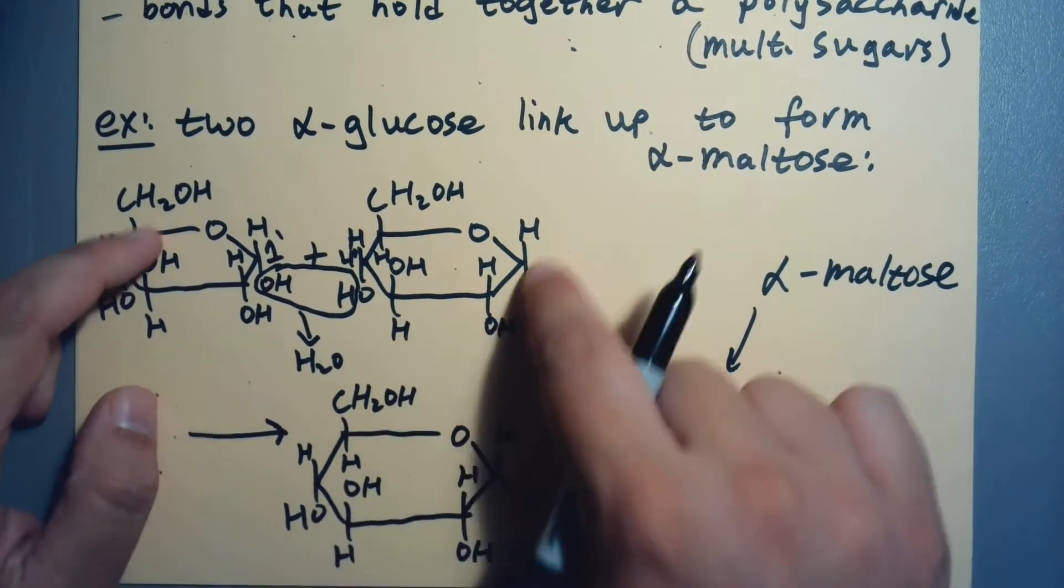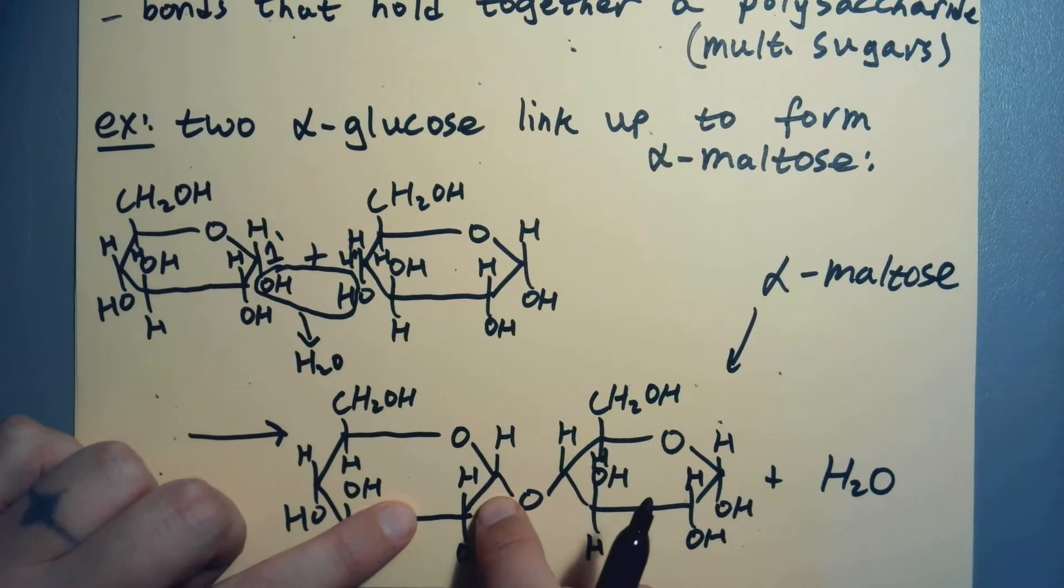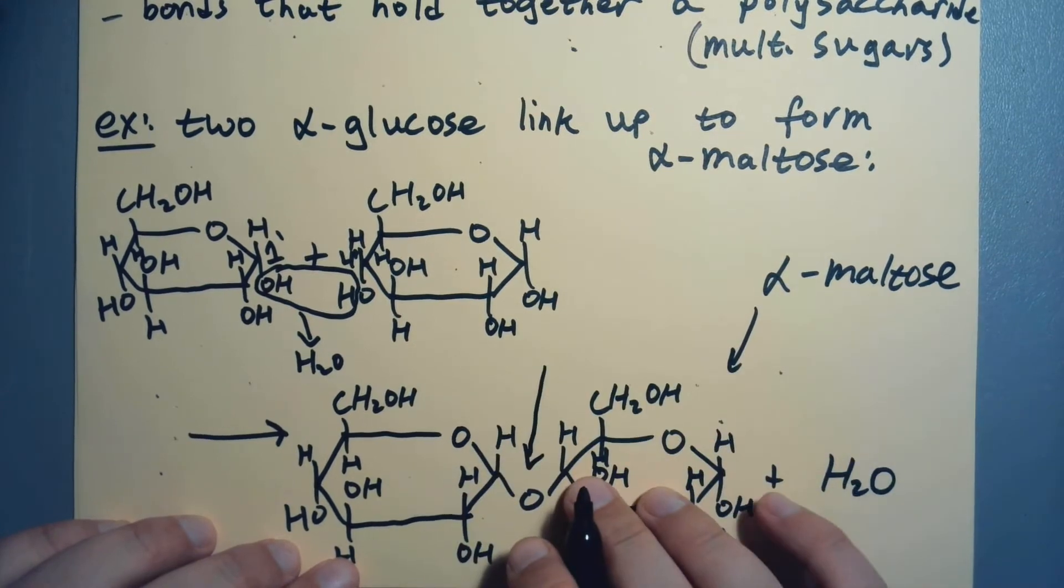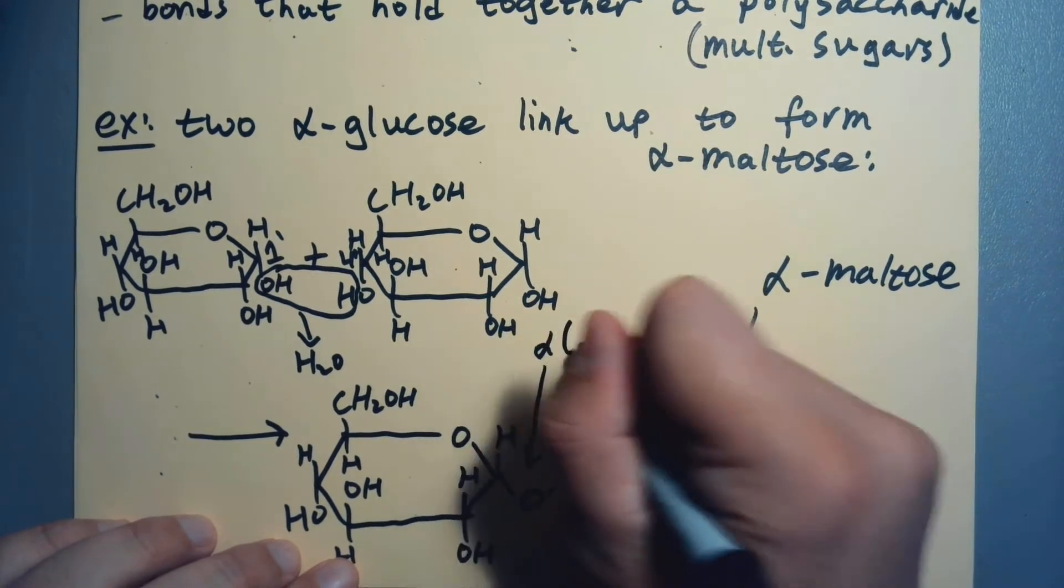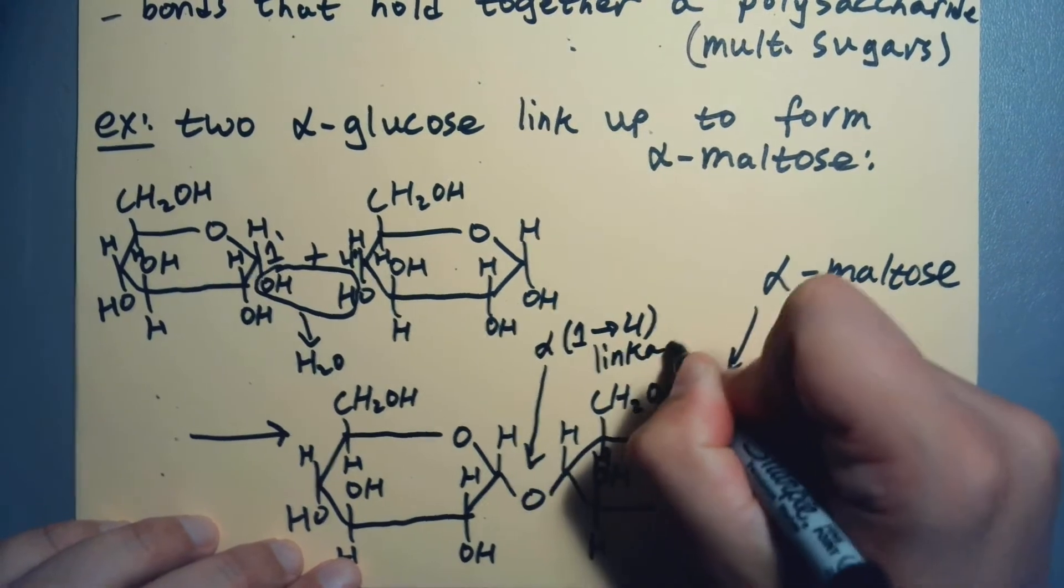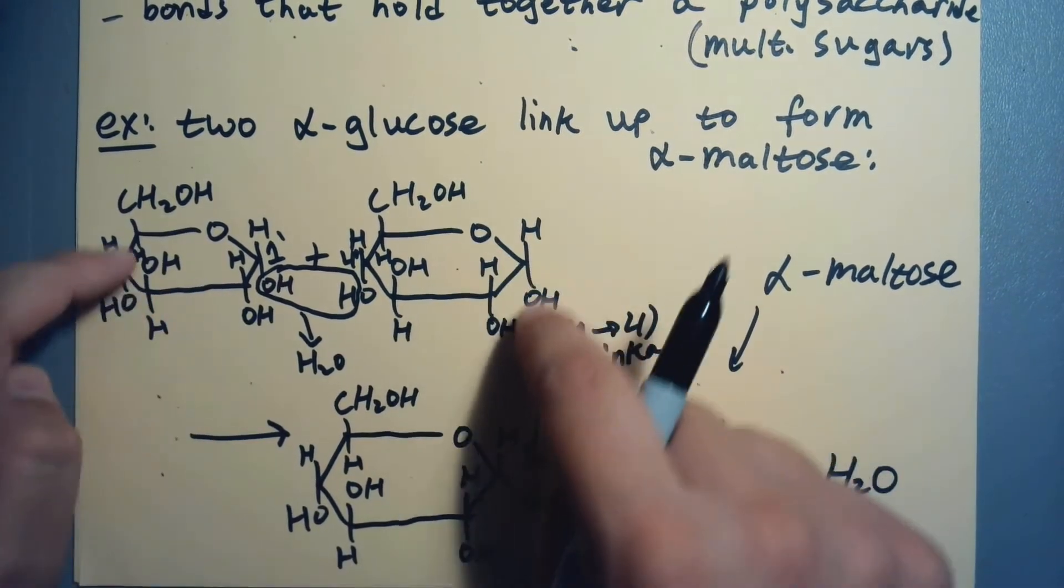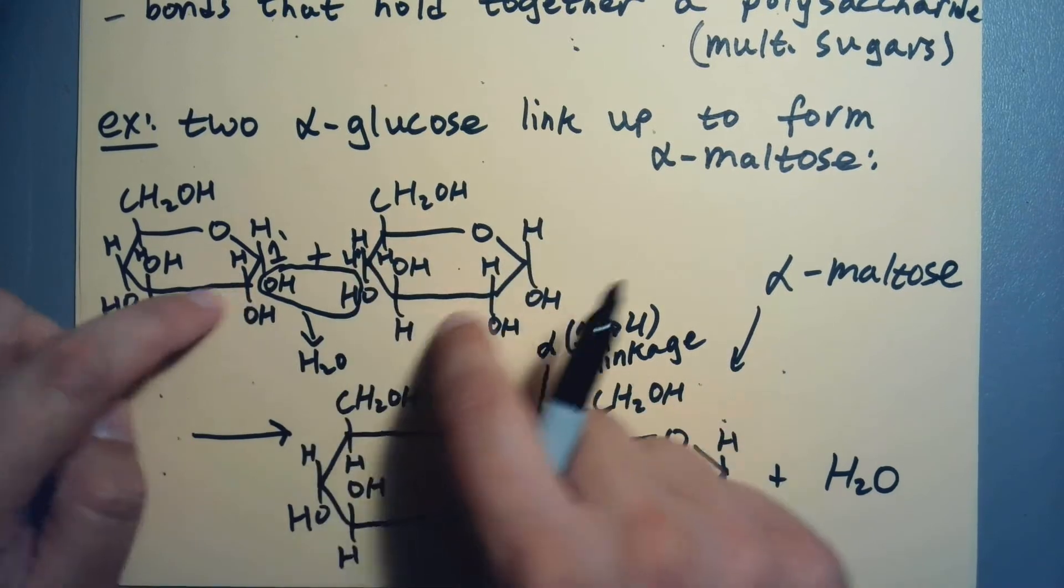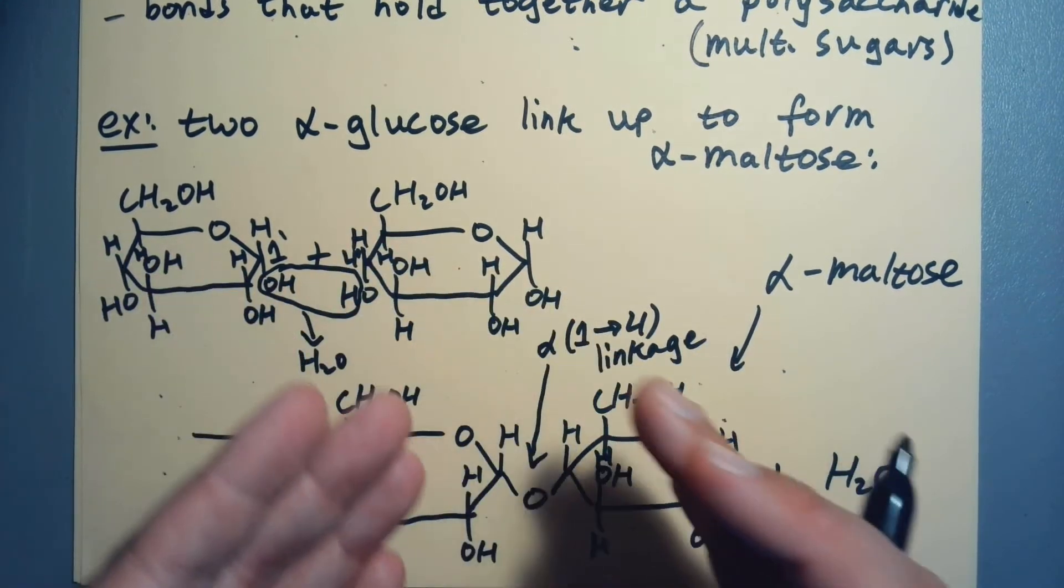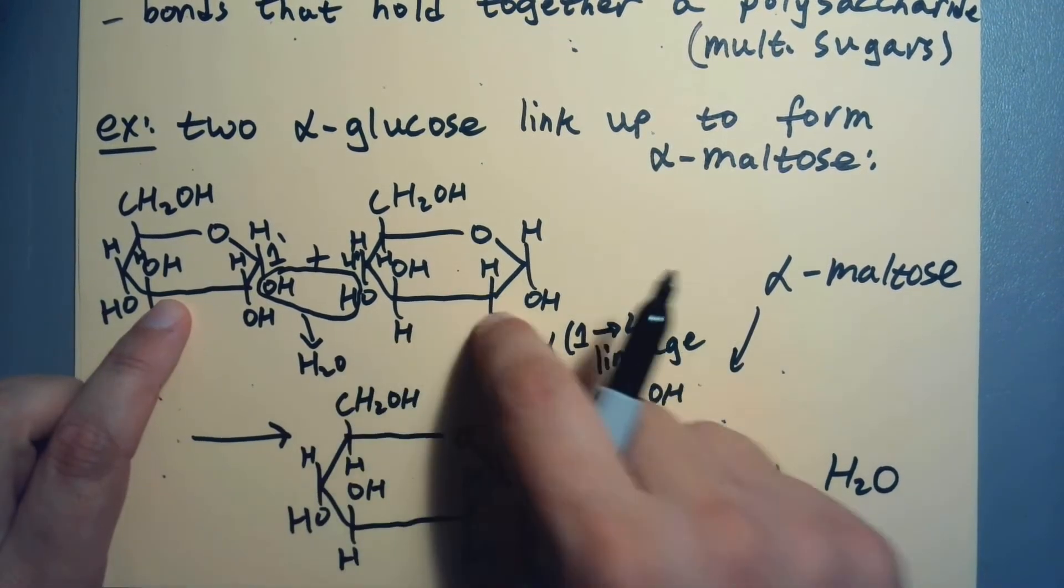And I alluded to this in the last video, but there are all kinds of locations. Why did I choose these two? Well, the answer is I have to use these two or I don't get maltose. You get a different sugar. So this linkage right here is what we call an alpha 1,4 linkage or glycosidic linkage. So maltose has this specific linkage. If I switch any of the other OH groups into this condensation reaction, I get a different sugar. I get a different disaccharide.